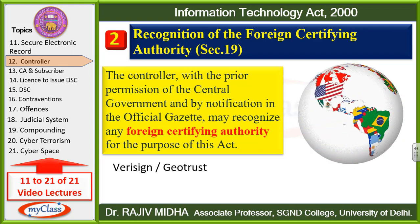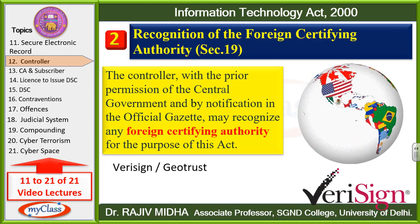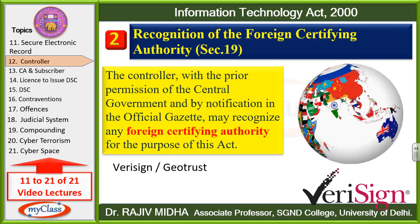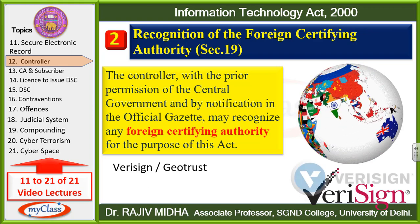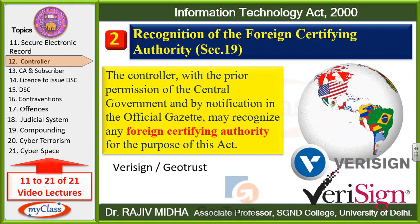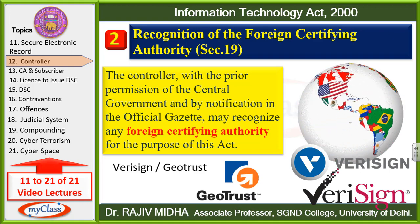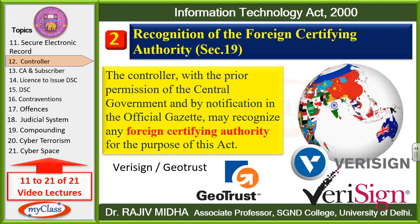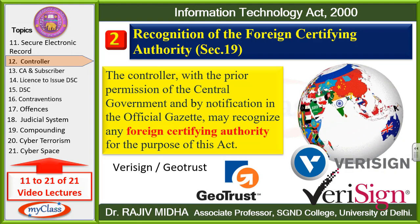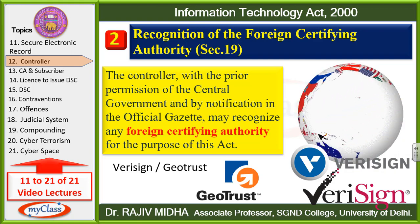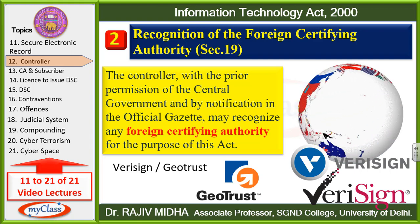For example, mein aapke saamne do foreign certifying authority ke naam de raha hoon — Verisign and Zio Trust. Agar yeh agencies India ke andar permission maangti hain ki hamein bhi certifying authority banane ki yahan par suvidha di jaaye, to yeh foreign certifying authority ko India ke andar allow kar sakte hain. Lekin iske liye Central Government ki permission chahiye aur official Gazette ke andar yeh baat notify ki jaayegi.